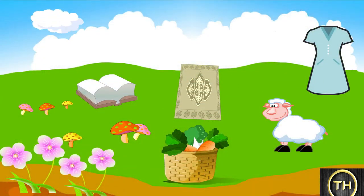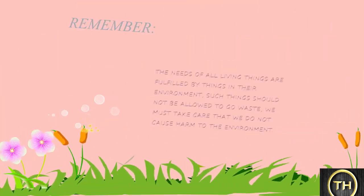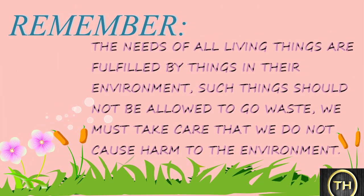Human beings use so many things from the environment. We get cotton, wool and silk from our environment, and we weave clothes from them. We make things like mat, basket, and paper from materials in our environment. Living things take many things from the environment. Remember, the needs of all living things are fulfilled by things in their environment. Such things should not be allowed to go to waste. We must take care that we do not cause harm to the environment.